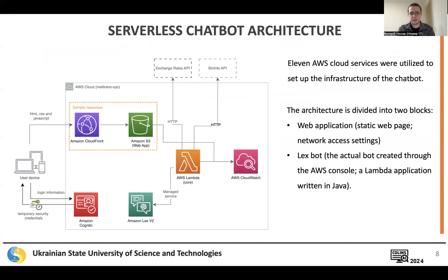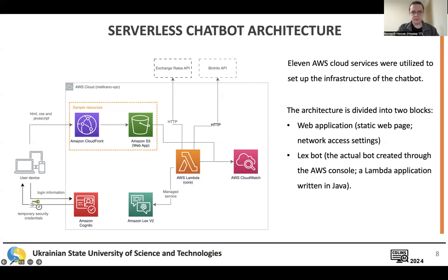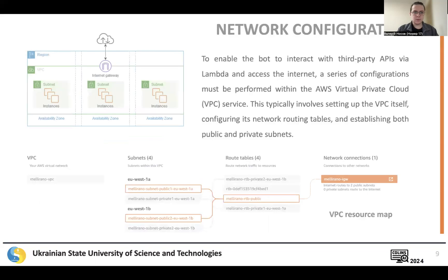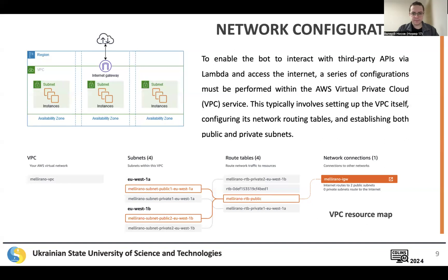During the bot development process, an entire infrastructure was deployed in AWS. The architecture is divided into two blocks: the web application — a static web page with network access settings and a Lex bot — and the actual bot created through the AWS console, and a Lambda application written in Java. The main focus was on core components in Amazon Lambda and configuring intents and conversation flows in Amazon Lex. To enable the bot to interact with third-party APIs via Lambda, a series of configurations must be performed within the AWS Virtual Private Cloud, involving setting up the VPC itself, configuring network routing tables, and establishing both public and private subnets.